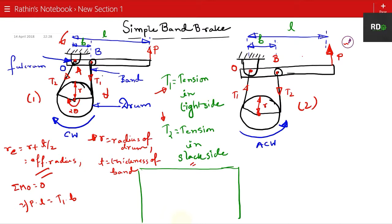In the anti-clockwise case, T1 is the tension in the tight side and T2 is the tension in the slack side. If we take the moment about O, it becomes P×L = T2×B. The summation of moments at O equals zero.